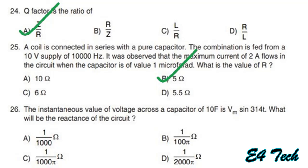Next: the instantaneous value of voltage across a capacitor of 10F is Vm sin(314t). What will be the reactance? Capacitive reactance Xc = 1/(ωC) = 1/(2πfC). From sin(314t), ω = 314, so f = 50 Hz. Therefore Xc = 1/(2π × 50 × 10) = 1/(1000π) ohms. That is option C.